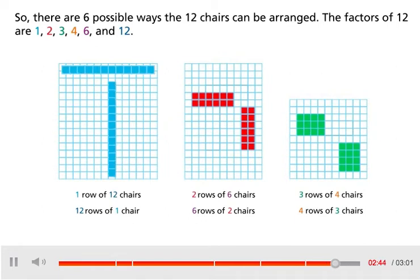So, there are 6 possible ways the 12 chairs can be arranged. The factors of 12 are 1, 2, 3, 4, 6, and 12.